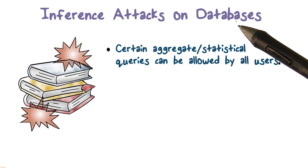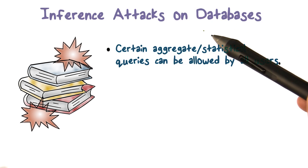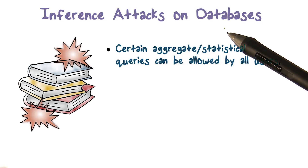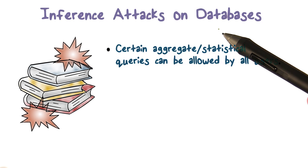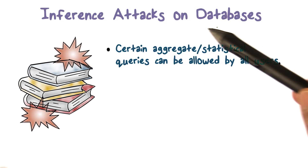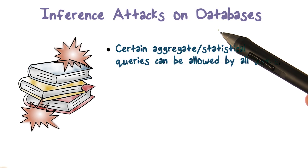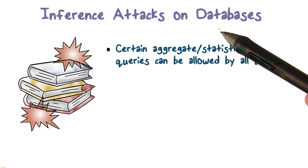They're allowed to execute those queries, but by executing those queries, they're able to gain access to information for which they're not authorized — they're not allowed to access that information directly. The way they gain access to that information is by executing a set of authorized queries and then making an inference based on the results returned by those queries.